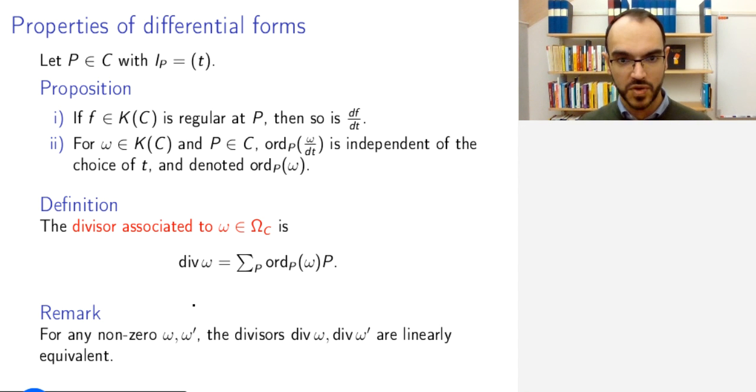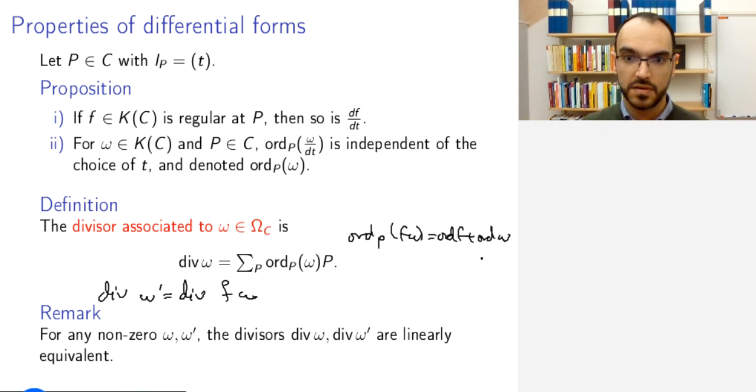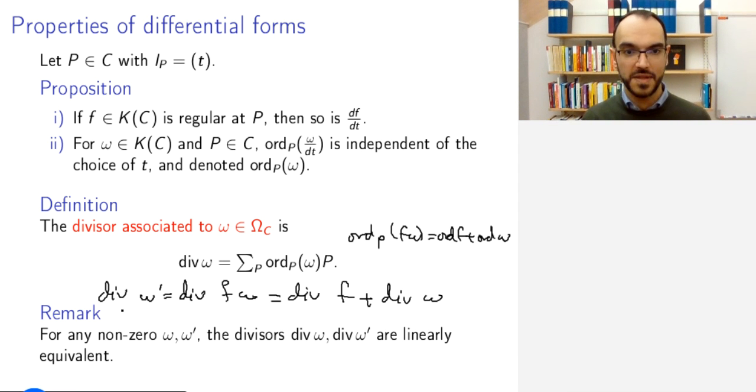So, I can take ω as the basis of my one-dimensional space of differential forms, and then ω' will be some f times ω. So, the divisor of ω' will be the divisor of f·ω. But the order of f·ω is the order of f plus the order of ω. By choosing a uniformizer and writing ω in this fashion, then you will get this from the definition of a discrete valuation. So, this will be the divisor of f plus the divisor of ω, by definition of the group structure and the abelian group of divisors. And so, this precisely means that these two divisors differ by a principal divisor, and so, therefore, they are linearly equivalent.